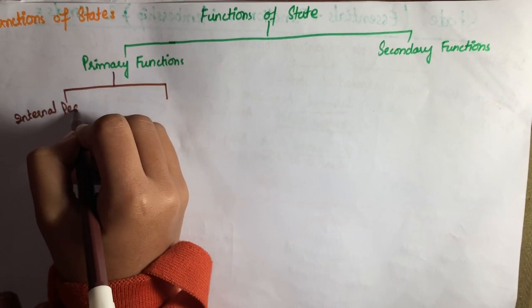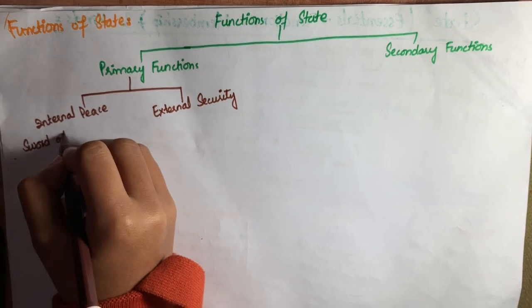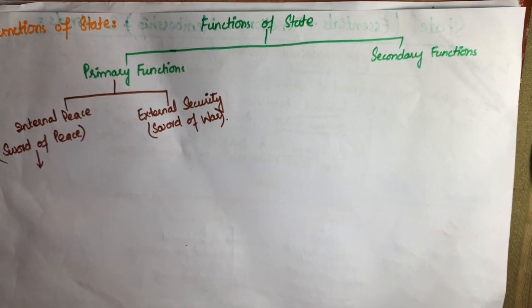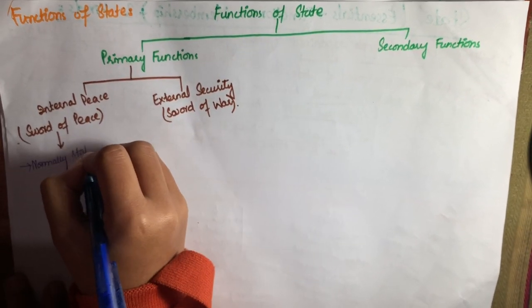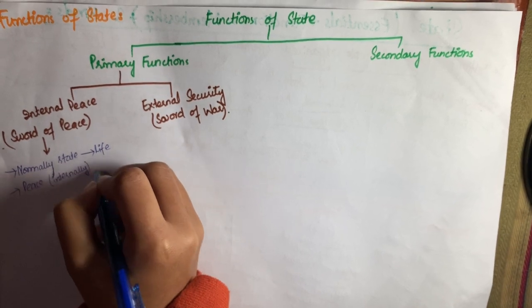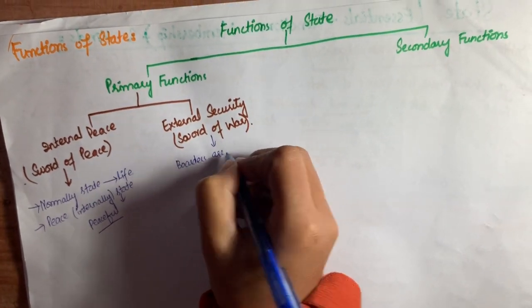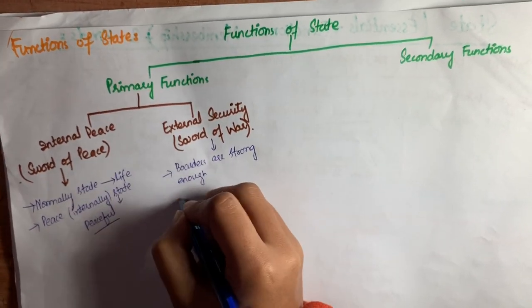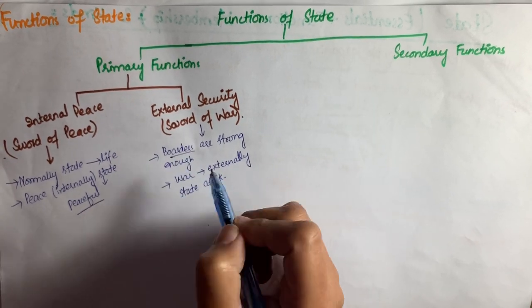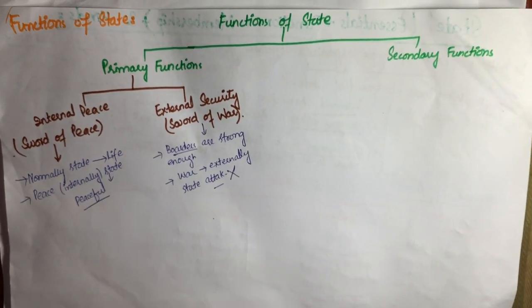Primary functions include internal peace and external security. Internal peace means maintaining peace during peacetime, and external security means defense during wartime. Internal peace refers to when the state is in its normal condition — life is going on normally, and the state is internally peaceful. External security means the state's borders are strong enough and do not allow external interference by powerful nations in wartime.